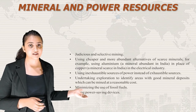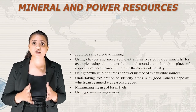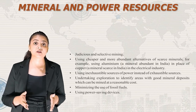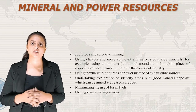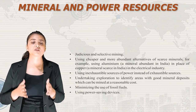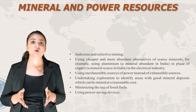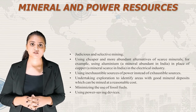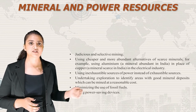Fourth, judicious and selective mining. Fifth, using cheaper and more abundant alternatives for scarce minerals — for example, using aluminum, abundant in India, in place of copper in the electrical industry. Sixth, using inexhaustible sources of power instead of exhaustible sources. Seventh, undertaking exploration to identify areas with good mineral deposits that can be mined at reasonable cost. Eighth, minimizing the use of fossil fuels. And ninth, using power-saving devices.